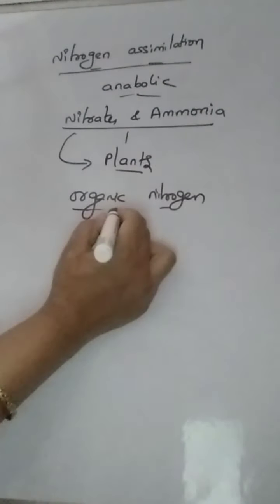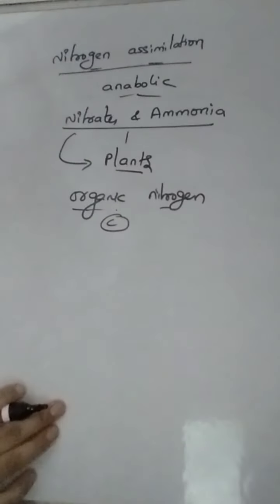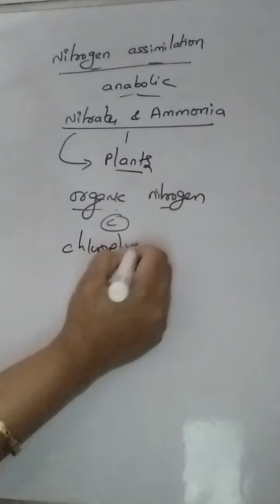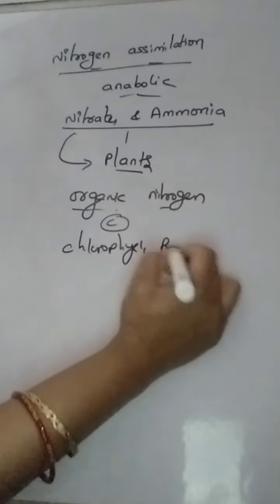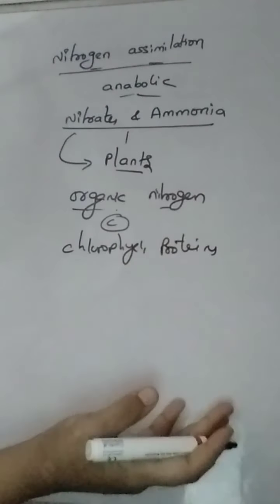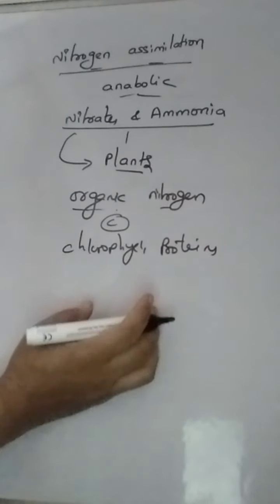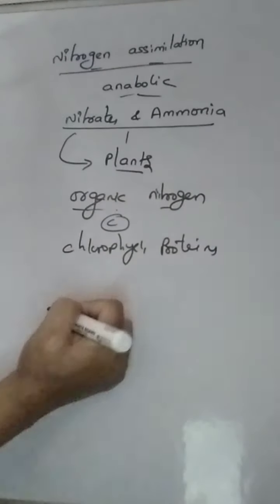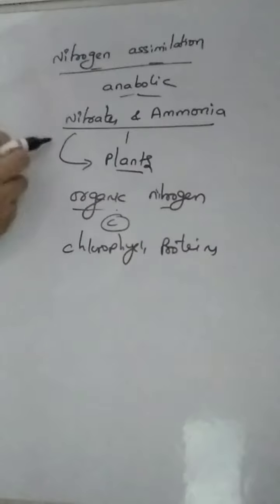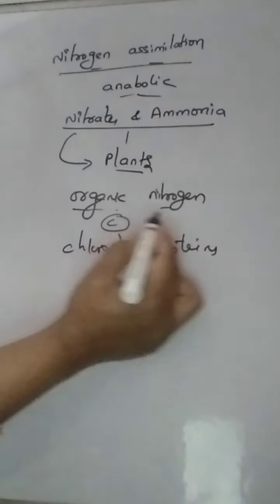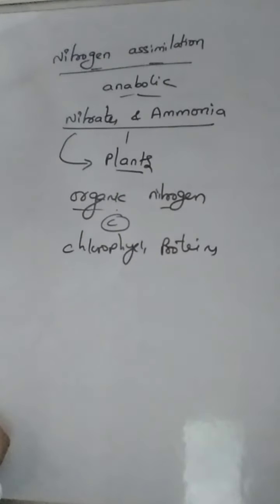What is organic nitrogen? Organic compounds are those which contain carbon. So in the plants, nitrogen-containing organic molecules are chlorophylls, proteins, and also enzymes. So these organic molecules or biomolecules are made up of nitrogen. These nitrates and ammonia will be converted into organic molecules or organic nitrogen. This is nitrogen assimilation.